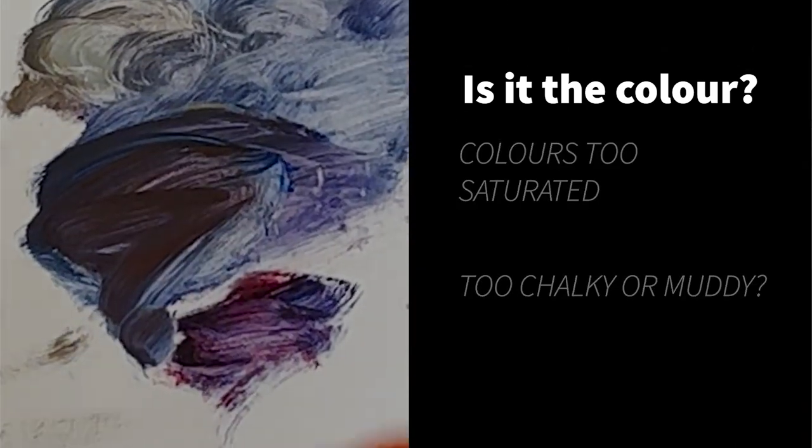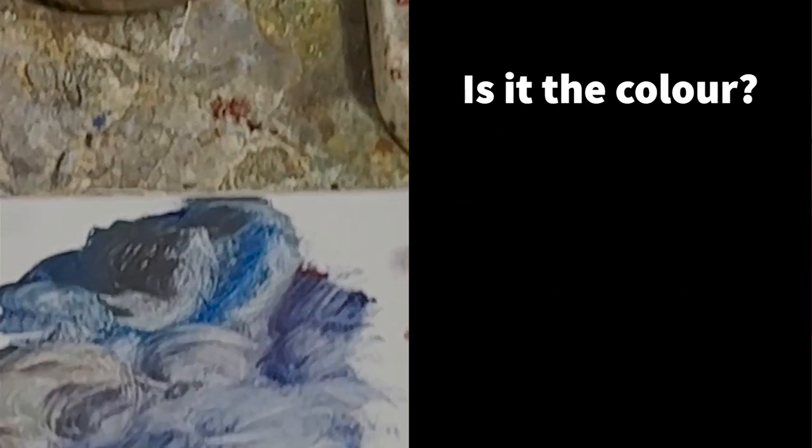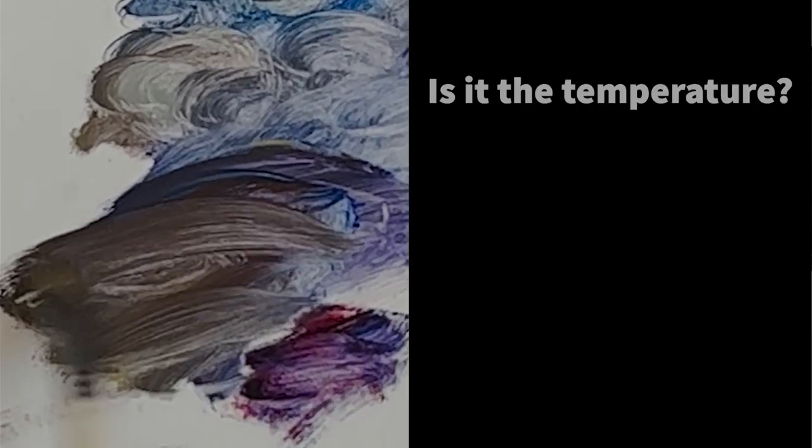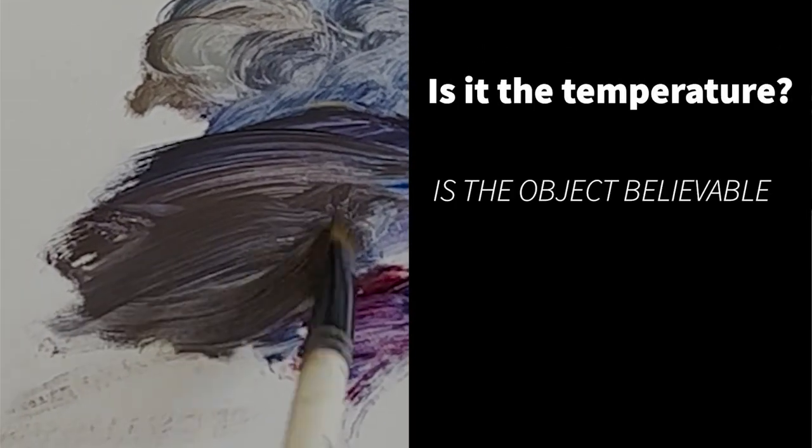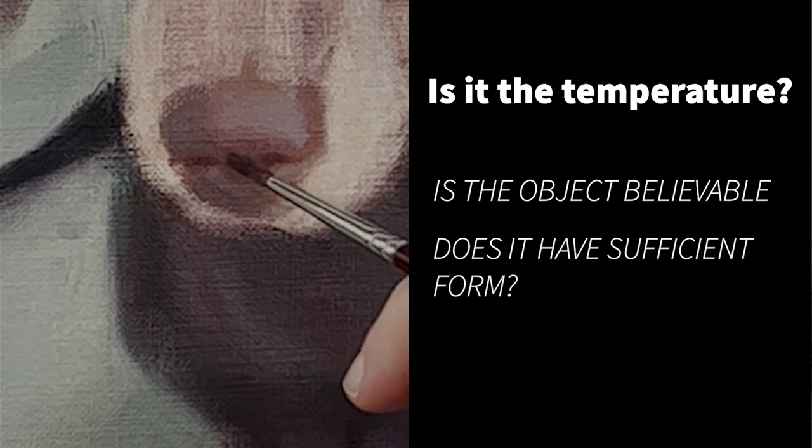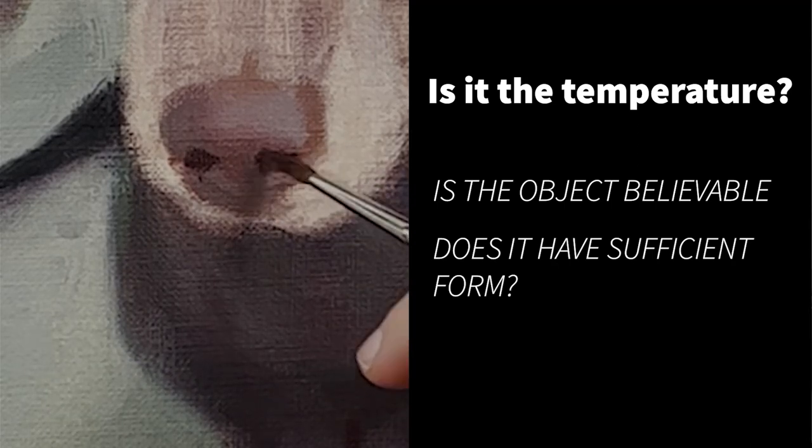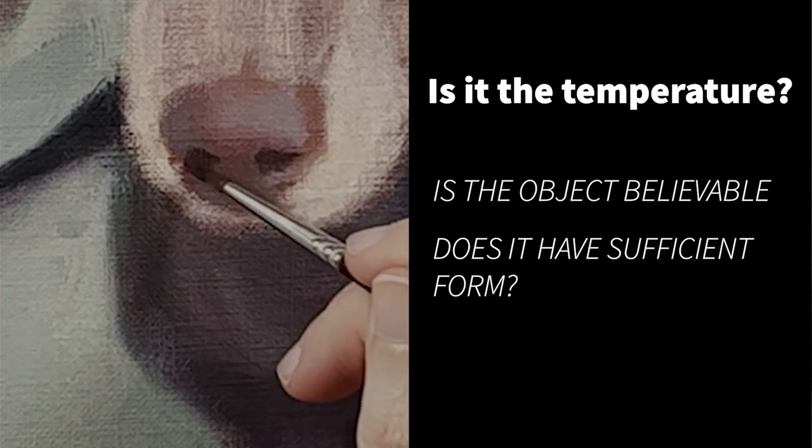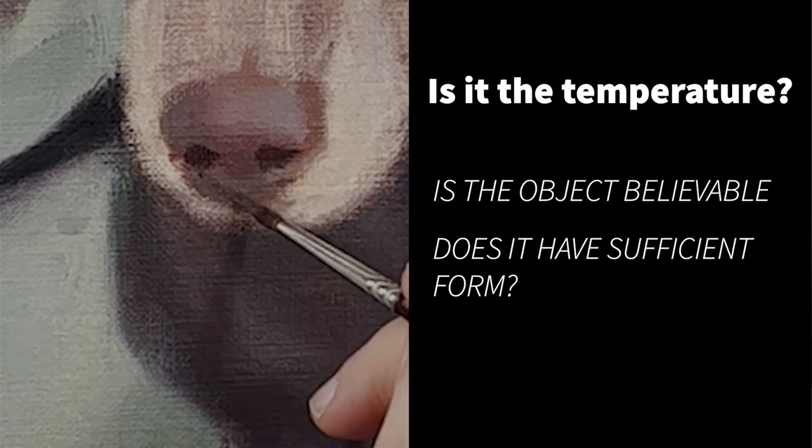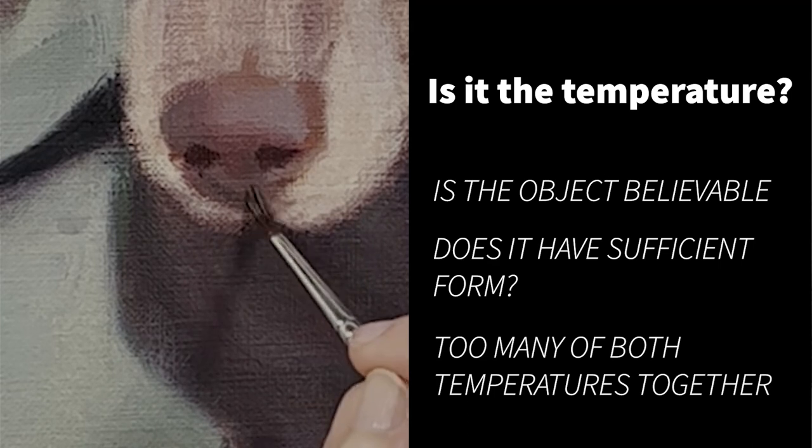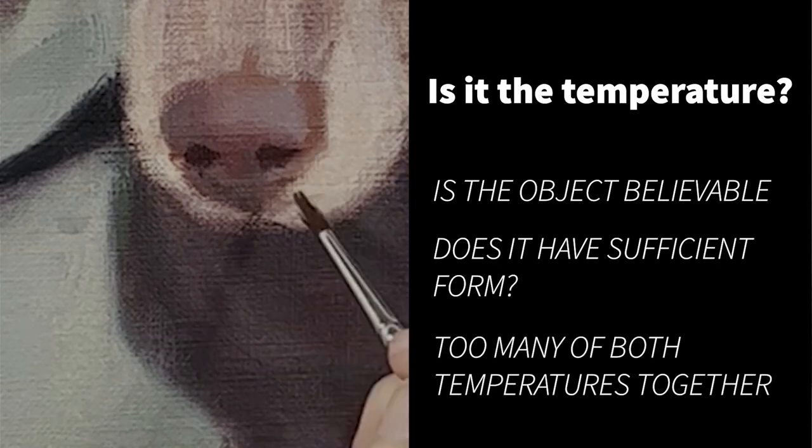If that is all okay, I then ask myself if my object looks solid and believable. Does it look like it is occupying that space? If it doesn't, then it will be my temperatures that are out. For example, I have too many warm temperatures together or too many cool temperatures together.